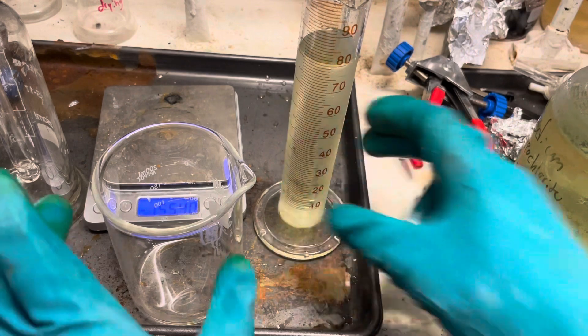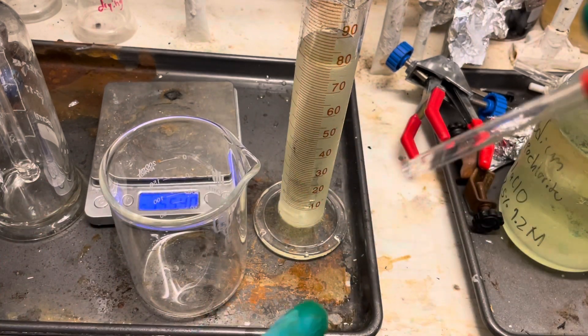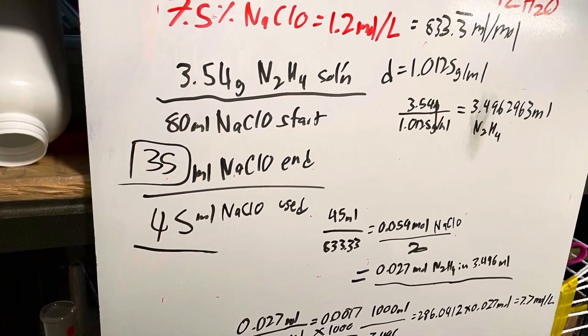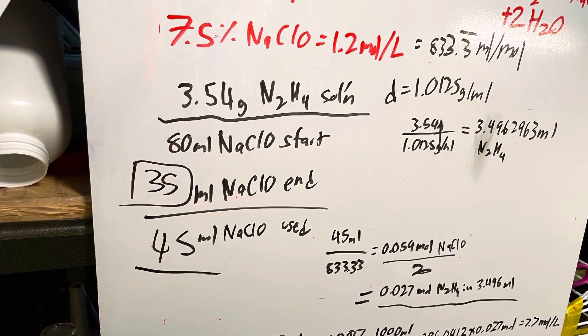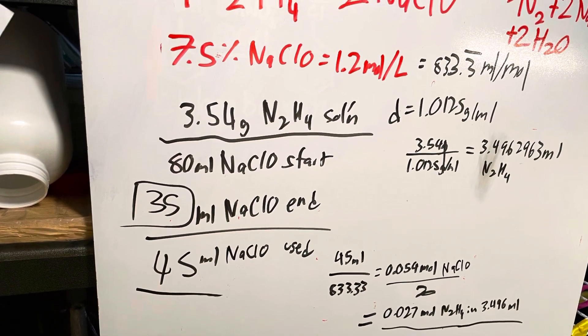I chose to use 80 milliliters of bleach and started adding our bleach to the hydrazine. I ended up using 45 milliliters of my sodium hypochlorite which is 7.5 percent, so it works out that our hydrazine is actually 24.3 percent.